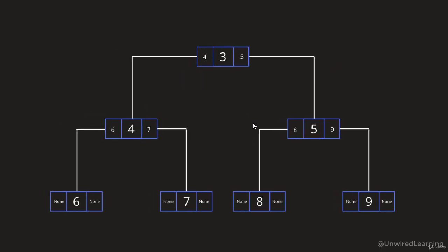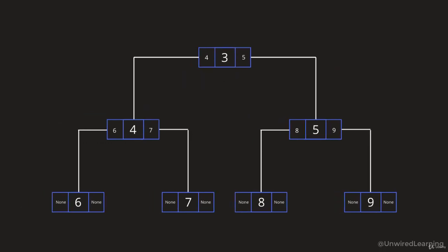Here each element is converted into a node and these nodes are connected with each other. In linked list what we used to have is next and prev (for doubly linked list). But here in binary tree what we have is left and right. This is our node structure: here we have key, or you can call it data or value, and then we have right and left pointers. Right will refer to the right child and left will refer to the left child. That's how we are going to connect them.